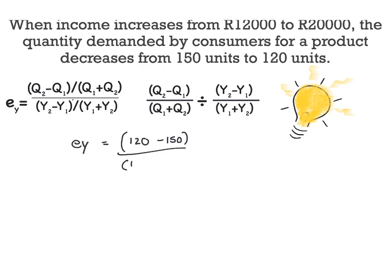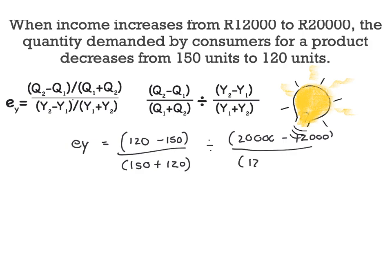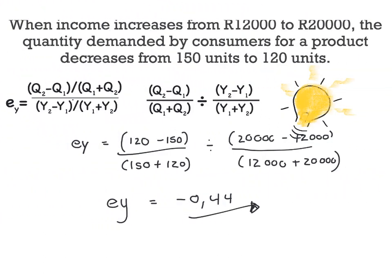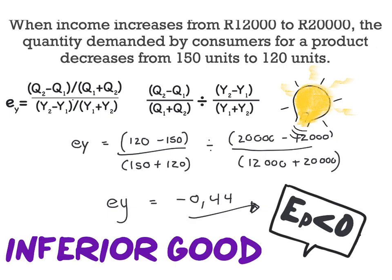EY is equal to quantity 2 minus quantity 1 divided by quantity 1 plus quantity 2, giving us 120 minus 150 divided by 150 plus 120. We then divide this by income 2 minus income 1 divided by income 1 plus income 2, which is 20,000 minus 12,000 divided by 12,000 plus 20,000. This gives us a final value of EY equal to minus 0.44. A negative income elasticity coefficient indicates that we are dealing with an inferior good.